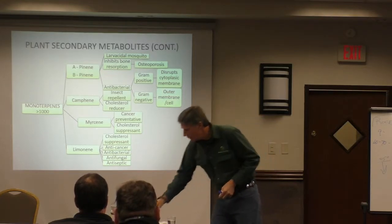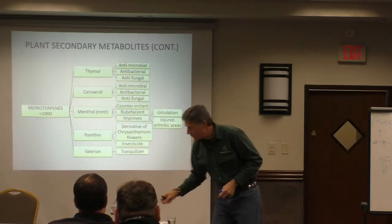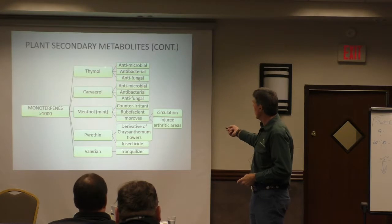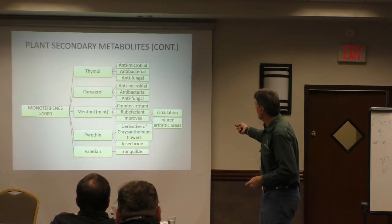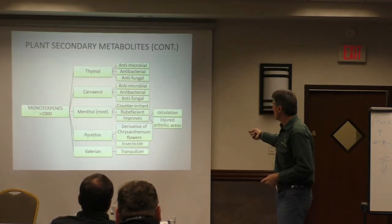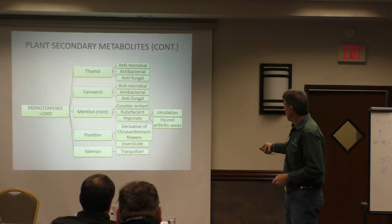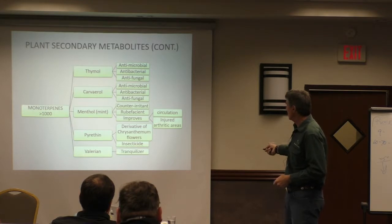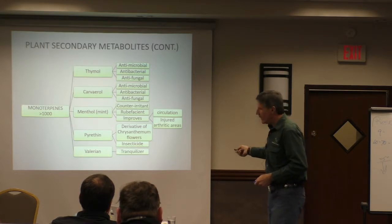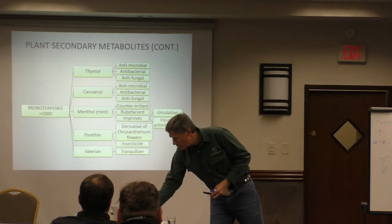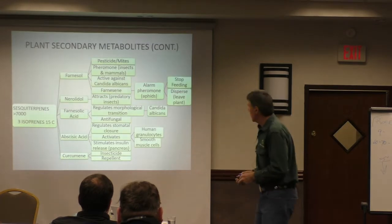So all of these things - let's just continue on through this stuff. More monoterpenes, look at all these: antimicrobial, antifungal. Tranquilizers - valium, or valerian - these all come from, produced by these plants.